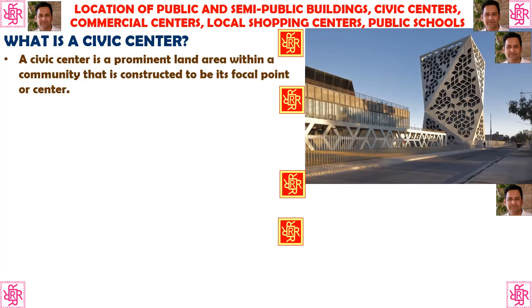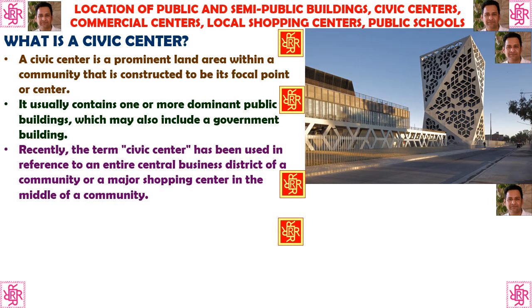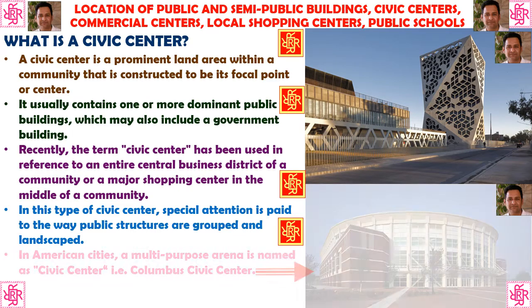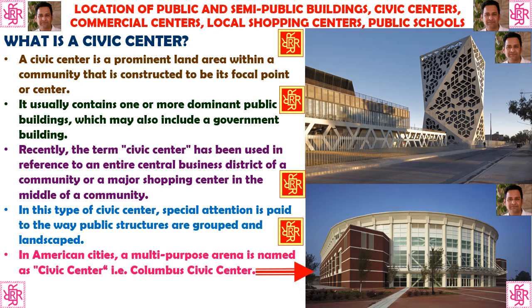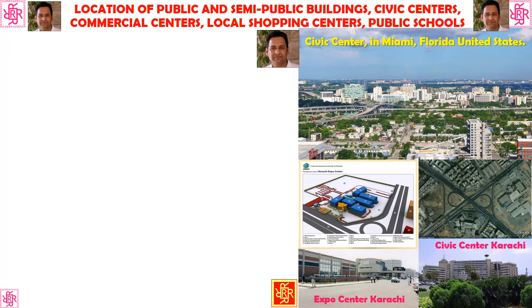A civic center is a prominent land area within a community constructed to be its focal point or center of the city. It usually contains one or more dominant public buildings, which may also include a government building. Recently the term civic center has been used in reference to an entire central business district or a major shopping center in the middle of a community. In American cities, the multi-purpose arena is named as civic center — for example, Columbus Civic Center — combining venues for sporting events, theaters, concerts, and similar events.